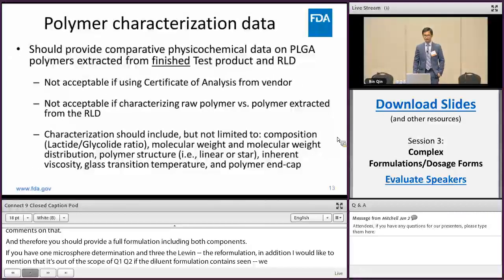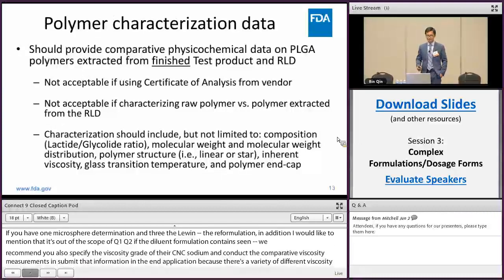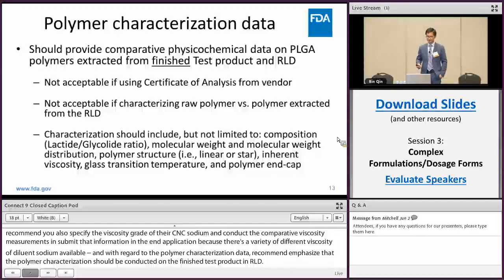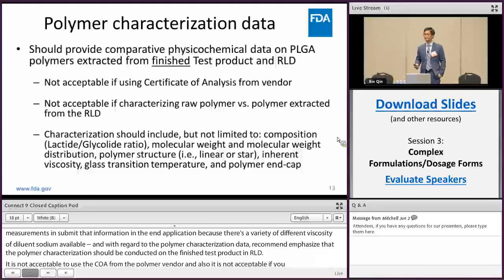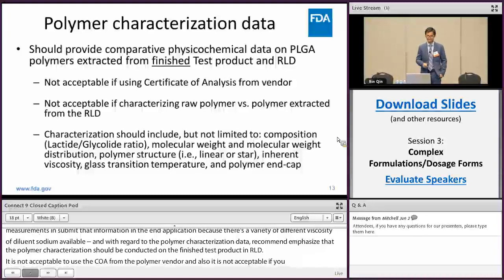With regard to polymer characterization data, we want to emphasize that the polymer characterization should be conducted on the finished test product and the RLD. It is not acceptable to just use the COA from the polymer vendor, and it is also not acceptable to characterize the raw test material and use that data to compare with the polymer from the RLD products. This is mainly because the manufacturing process can change the polymer properties, and the polymer characterization should be complete.